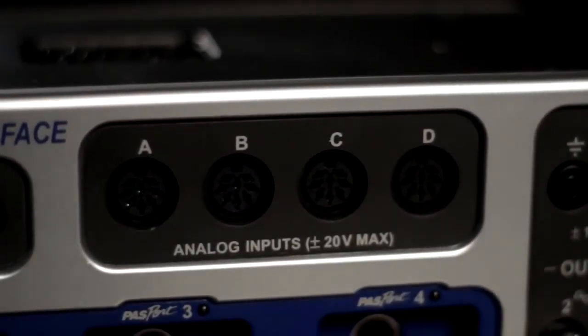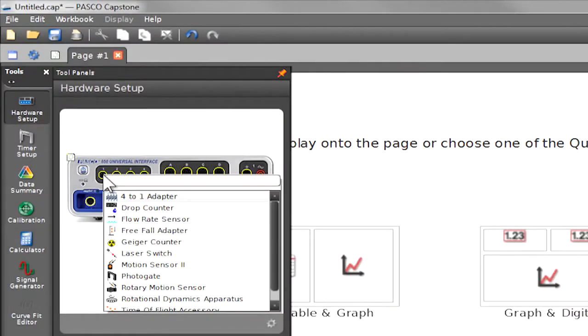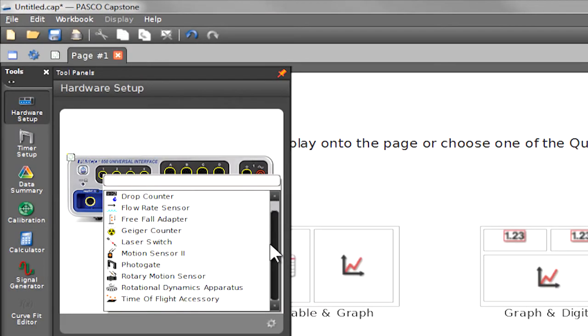It allows you to use Science Workshop analog sensors, and these will give you the high sample rates that you're looking for. You can use the Science Workshop digital sensors, and this will give you things like photo gate analysis and nuclear analysis.